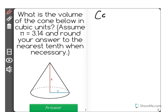First I need to remember that the volume of a cone has a formula of 1/3 times pi times radius squared times height.